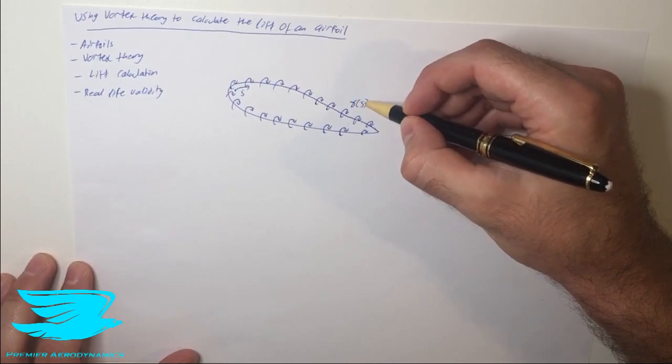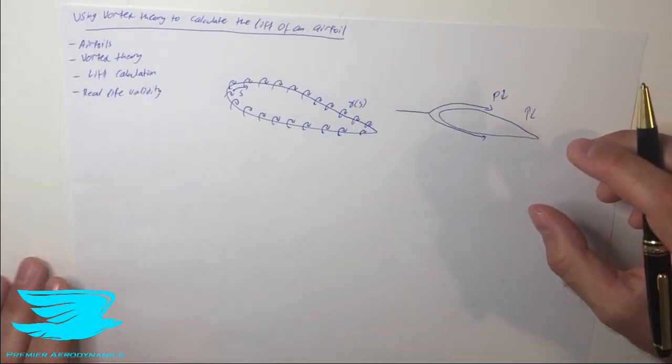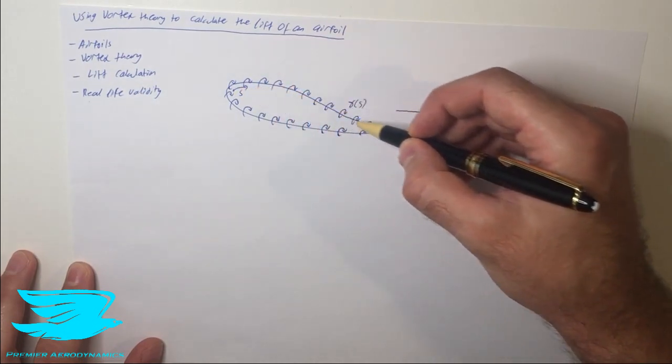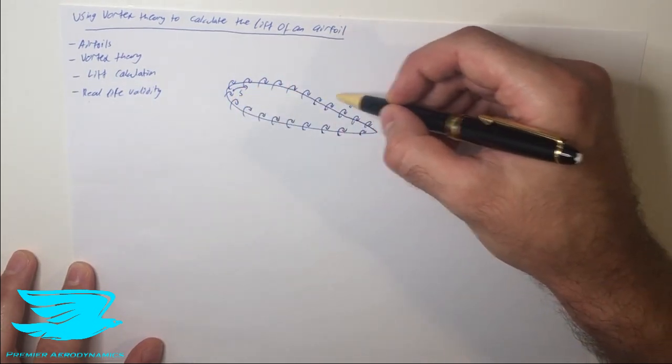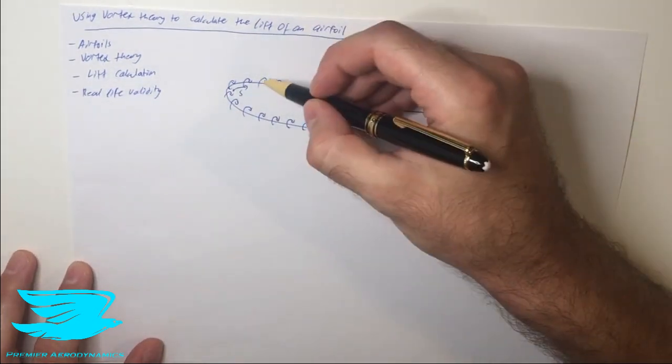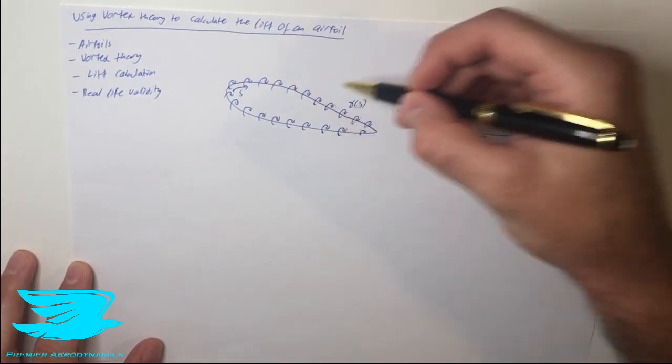And we denote this by this value here, gamma, small gamma s. So s is a starting point and we go around and as we go around this closed surface the gamma is a function of this distance that we travel and we know what the gamma is. So for example here it might be 10, here it might be 5 or whatever.